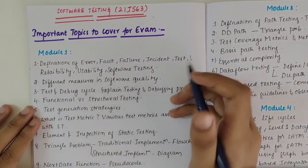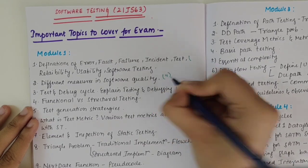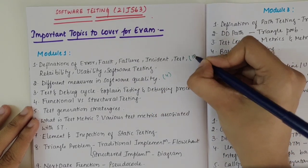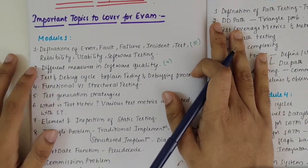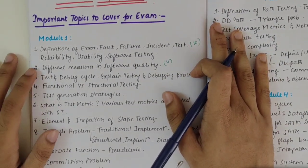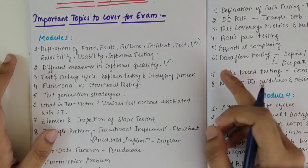Next we have different measures in software quality. This is again a four-mark question with about six to seven points to write — the same reliability, usability, and all that.